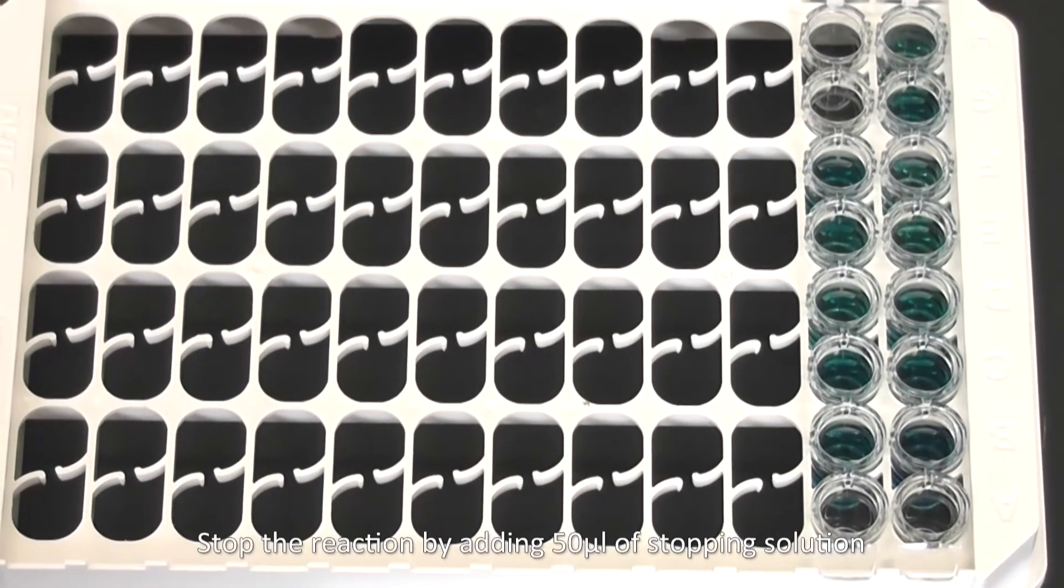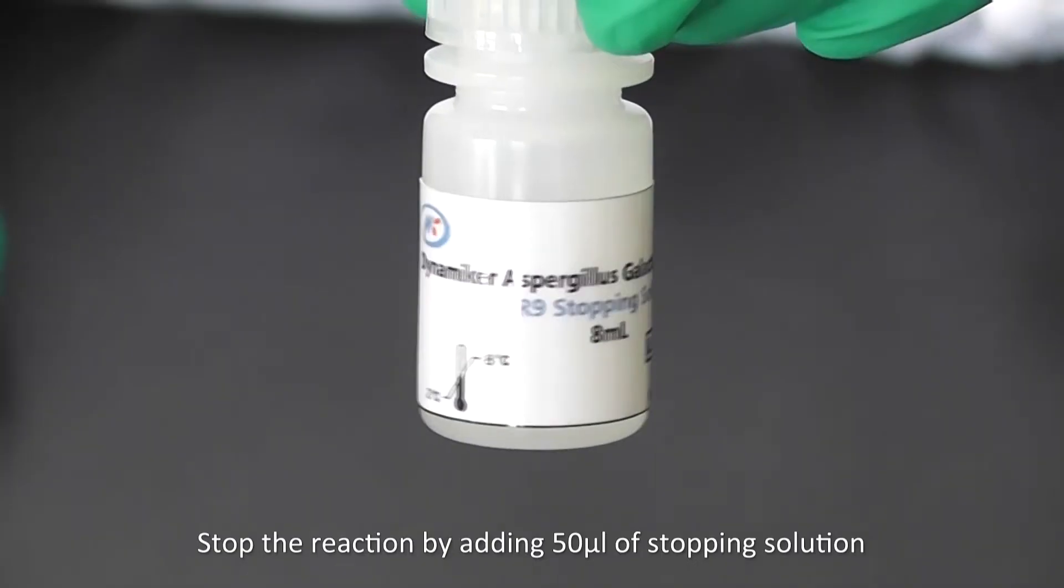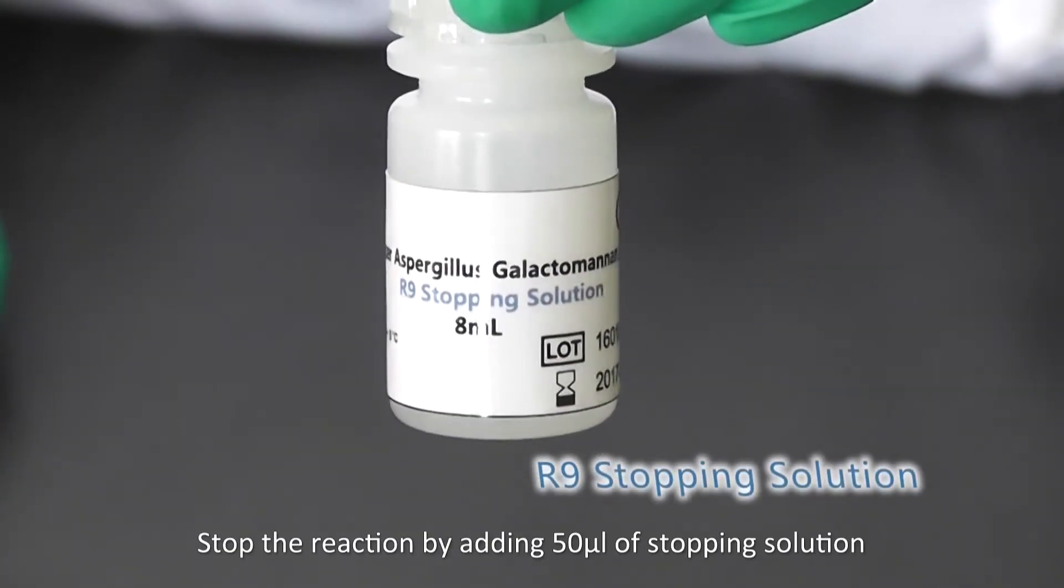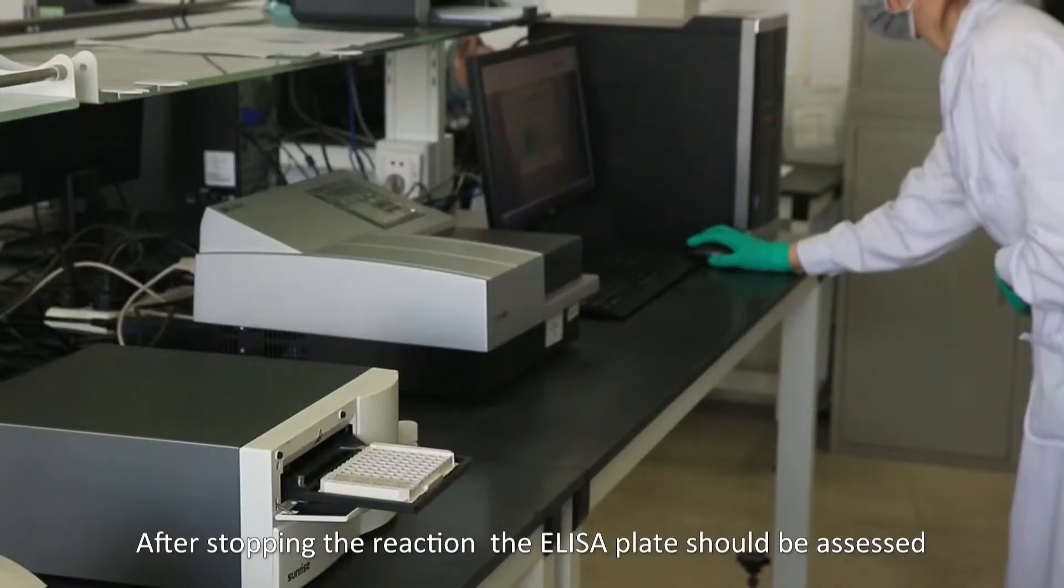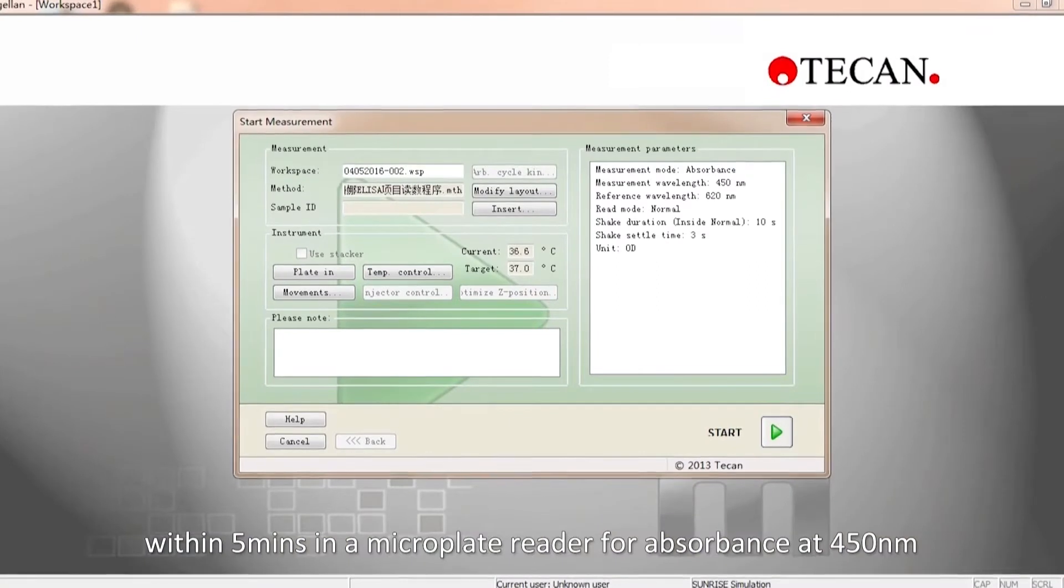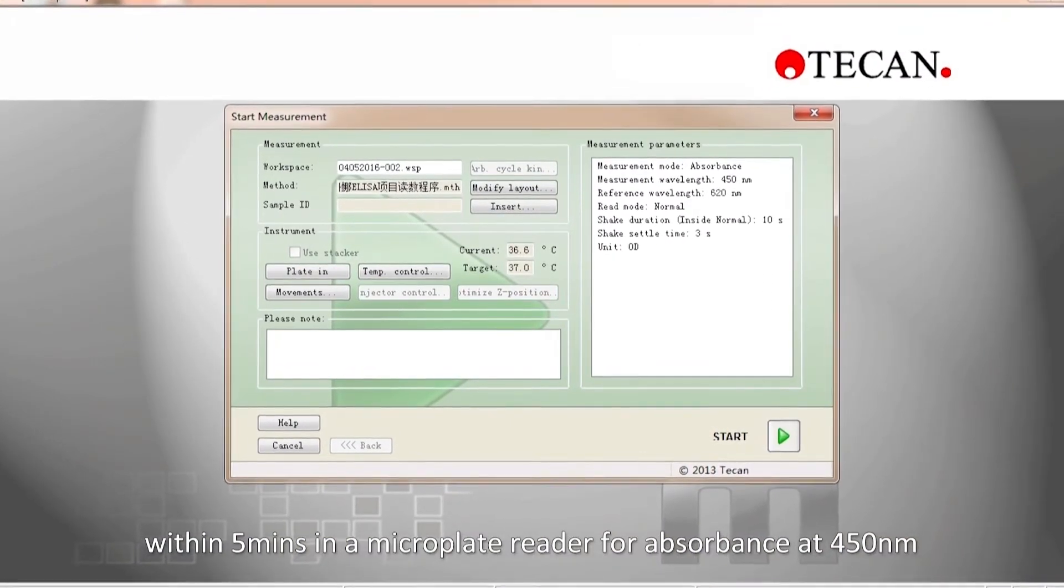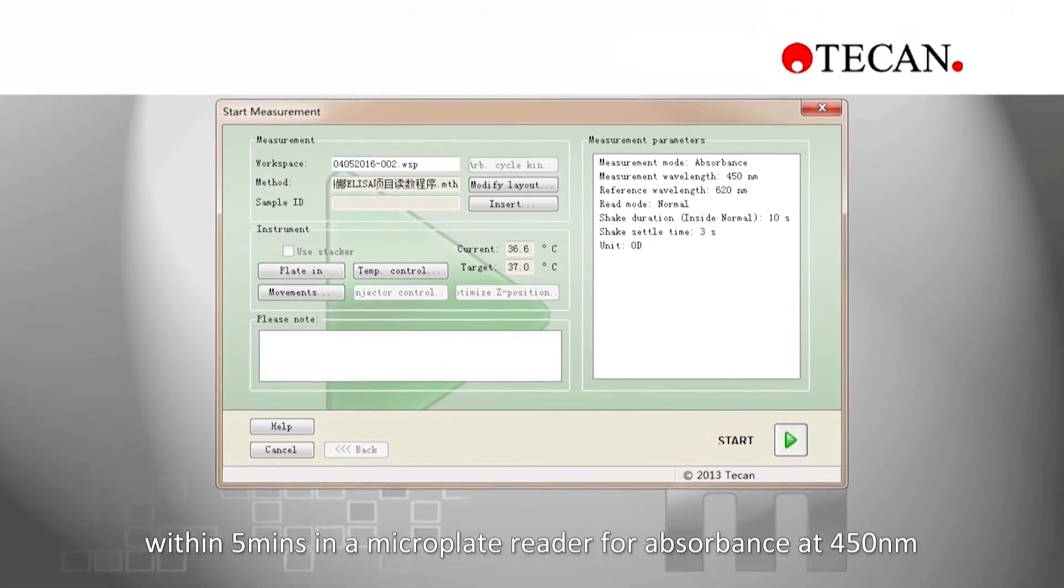Stop the reaction by adding 50 microliters of stopping solution. After stopping the reaction, the ELISA plate should be assessed within 5 minutes in the microplate reader for absorbance at 450 nanometers.